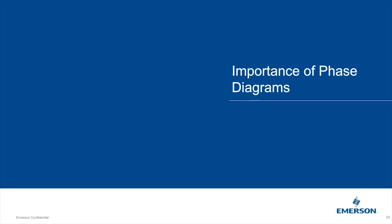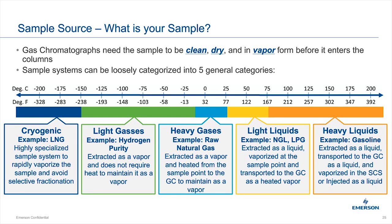Moving on to phase diagrams. The GC requires clean, dry gas. We categorize sample types into five groups: cryogenic (like LNG), light gases, heavy gases, light liquids, and heavy liquids. We won't cover LNG here as it's a special case that could take hours to discuss. We'll focus on light gases, heavy gases, light liquids, and heavy liquids.